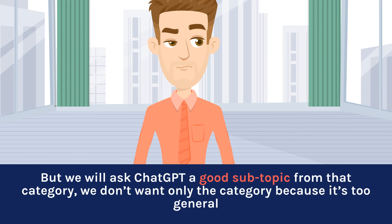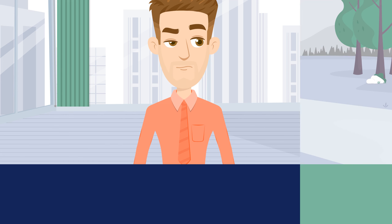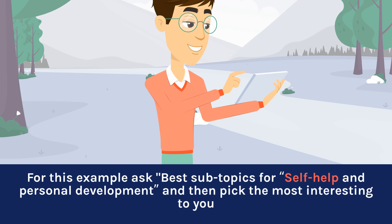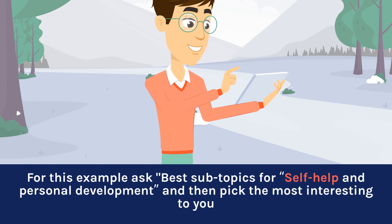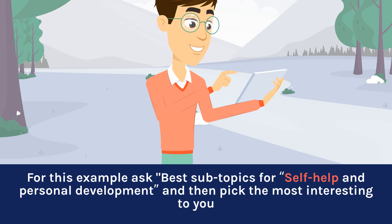But we will ask ChatGPT for a good subtopic from that category — we don't want only the category because it's too general. For this example, ask for the best subtopics for self-help and personal development, and then pick the most interesting one to you. In this case, we will be choosing productivity and time management.